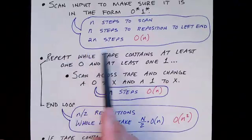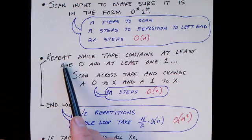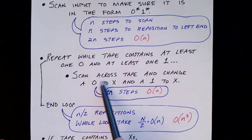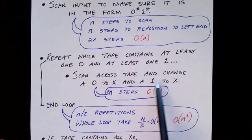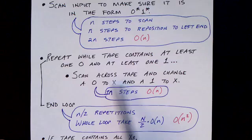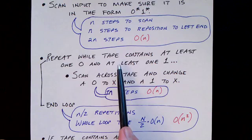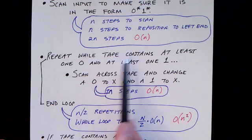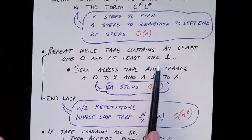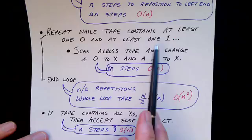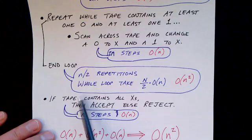The next thing we do is we go back to the beginning of the tape and scan the tape in a loop. Each iteration of the loop will scan across the tape, and each time it does, it will change the first zero it encounters into an X, and it will change the first one it encounters into an X, and then return to the left end of the tape. This operation of scanning and changing one zero and one one to X's will be repeated while the tape contains at least one zero and at least one one.